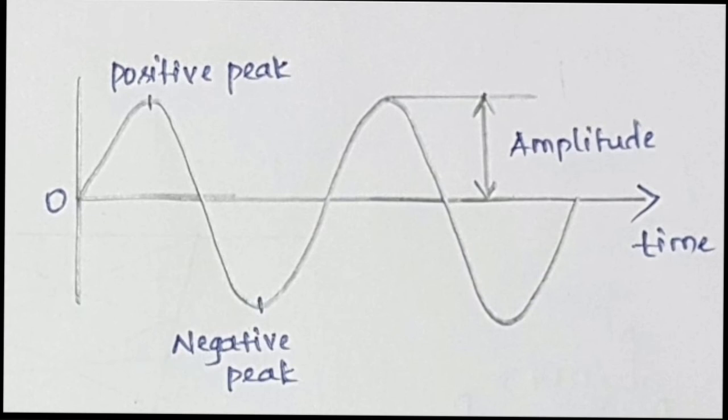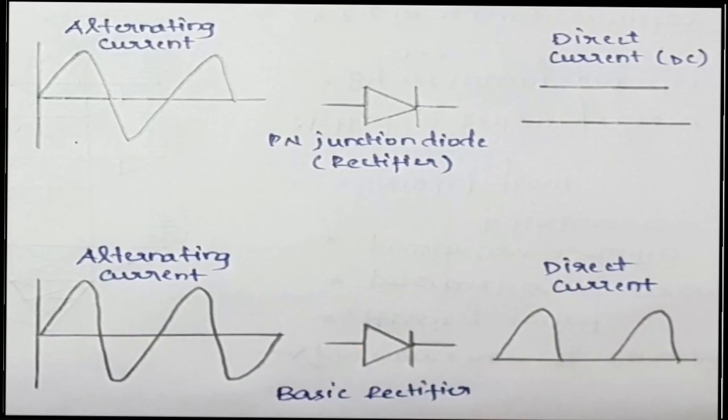The alternating current starts at zero, rises to a positive peak, then reverses direction and falls to a negative peak, then returns to zero — this completes one cycle. During the positive half cycle, the diode is forward biased and current flows. During the negative half cycle, the AC current is in the reverse direction, so the diode is reverse biased and current is blocked.